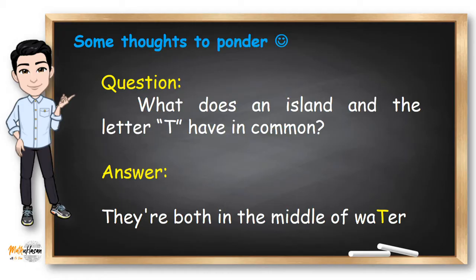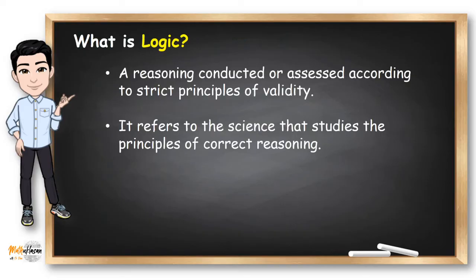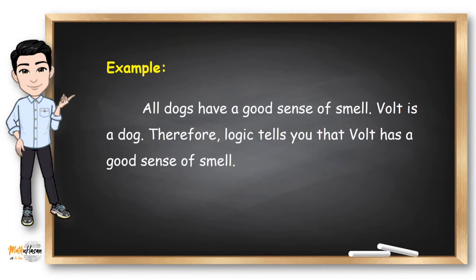If we use and follow strict principles of validity when reasoning, it's called logic. For example, all dogs have a good sense of smell. Now, since Volt is a dog, therefore logic tells us that Volt has a good sense of smell.